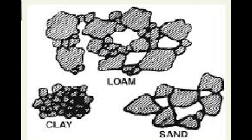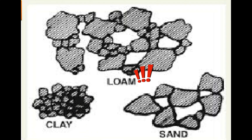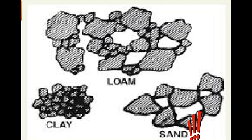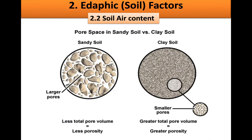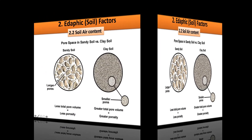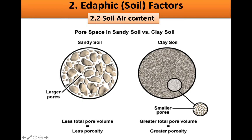Clay soil consists of very tiny soil particles. Loam has slightly bigger particles, while sandy soil is much coarser and consists of larger soil particles.